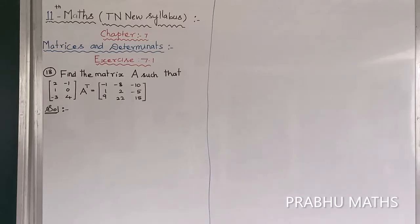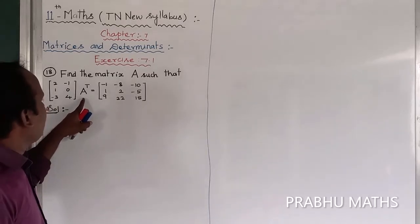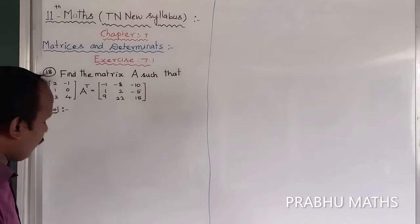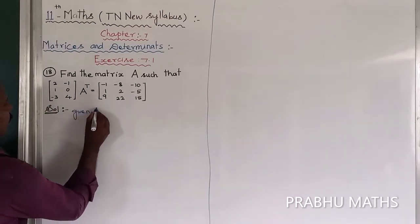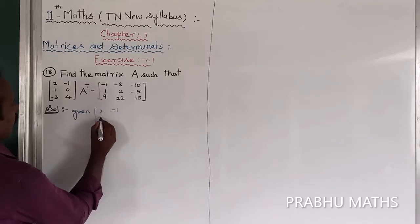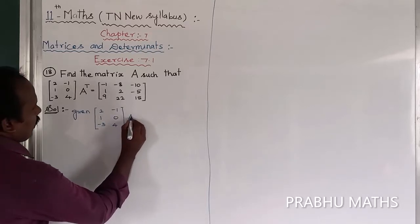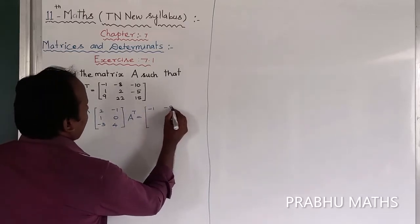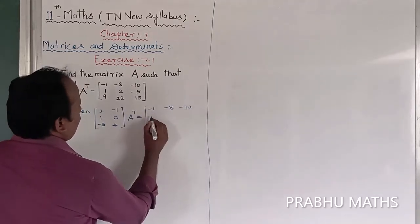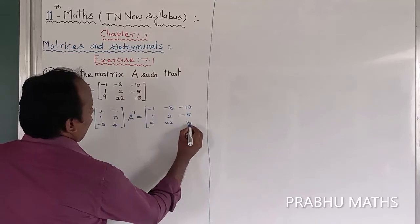Problem 18: Find the matrix A, where A is a 3×2 matrix, such that A times A-transpose equals a 3×3 matrix. The given matrix is: 2, -1, 1, 0, -3, 4. And A-transpose equals: -1, -8, -10, 1, 2, -5, 9, 22, 15.